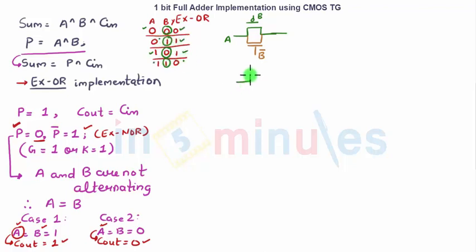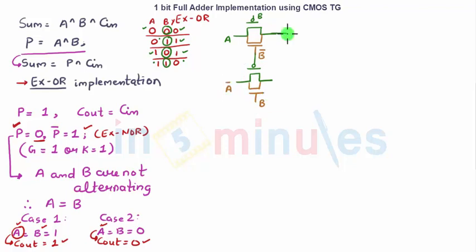So when B is equal to 1, for the PMOS that is going to be B_bar, and this is going to be B. If B is equal to 1, the output is A_bar. This is my output A XOR B, which is nothing but the propagate signal. I have implemented my propagate signal.